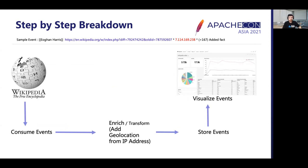Let's break down the problem further. A sample event from the Wikipedia stream contains the title of the page, the URL of the page that was edited, the IP address of the user, and the number of characters added or deleted. First we would like to consume these events as they arrive raw from Wikipedia. After consuming these events, we would like to enrich them by adding geolocation information, which can be done by performing a geolocation lookup over the IP addresses to know which city or country a particular IP address belongs to.